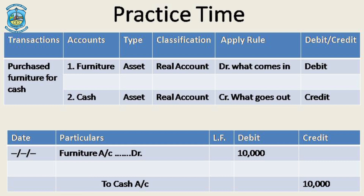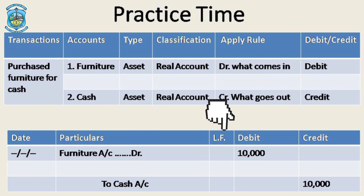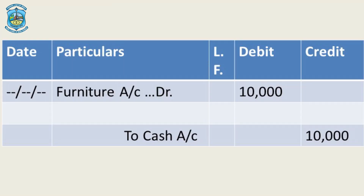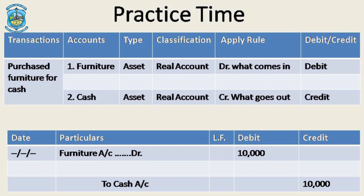The journal entry for this transaction will be passed in the journal book. The journal book has five columns: number one, date; second, particulars; third, ledger folio; fourth, debit; and fifth, credit. So on a specific date, the journal entry would be: furniture account debited to cash account with the given amount.